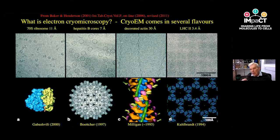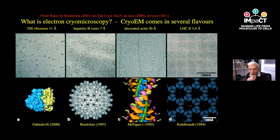Now you would add a fifth panel — these four styles of specimen have been joined by very big developments in electron cryo-tomography. Wolfgang Baumeister and Grant Jensen have been the leaders in developing tomography technology.